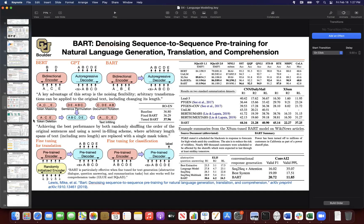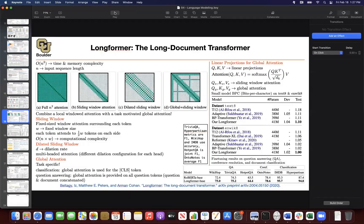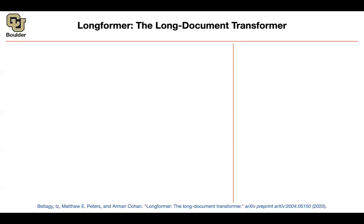Now that we are using transformers, we saw three methods of making them more efficient when we were doing translation. Here is the fourth one — it's about Longformer. We know that the attention mechanism has a time and memory complexity of order n squared, and we want to reduce that as much as possible, and perhaps make it linear.